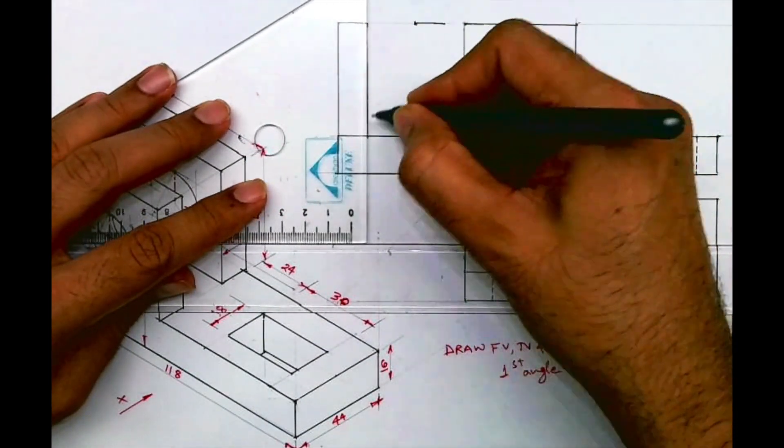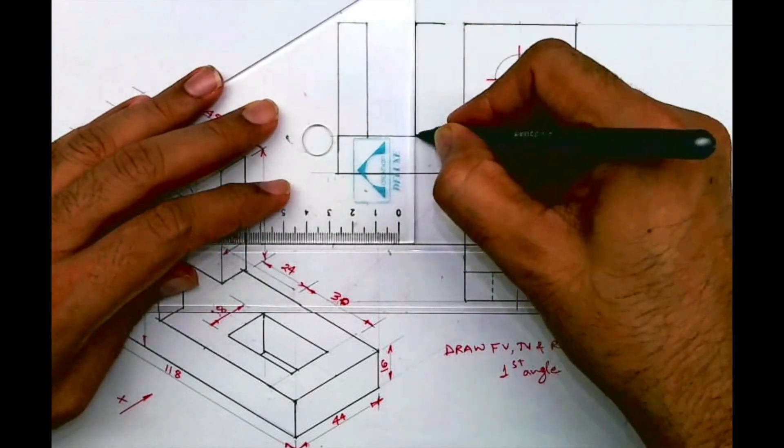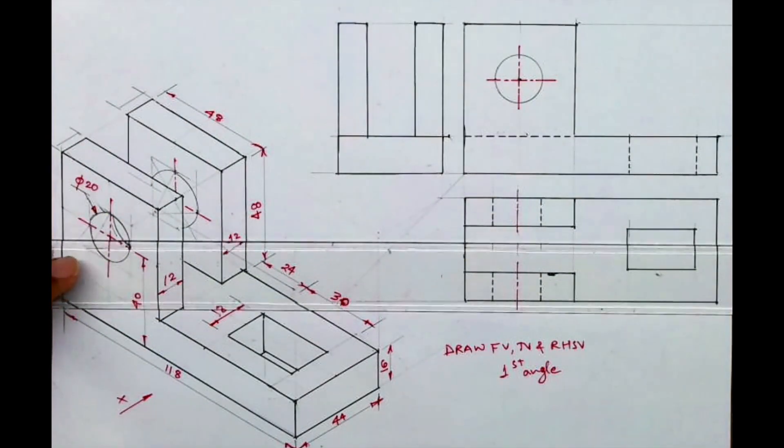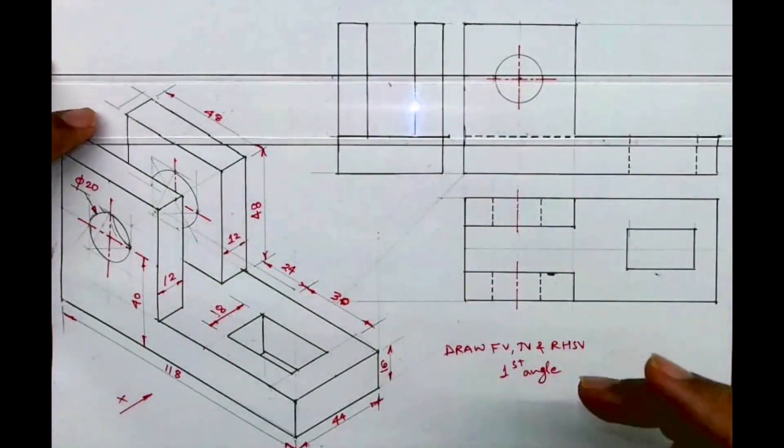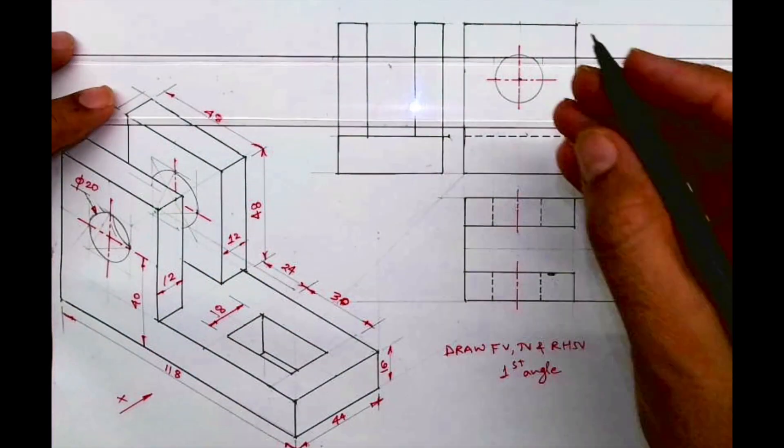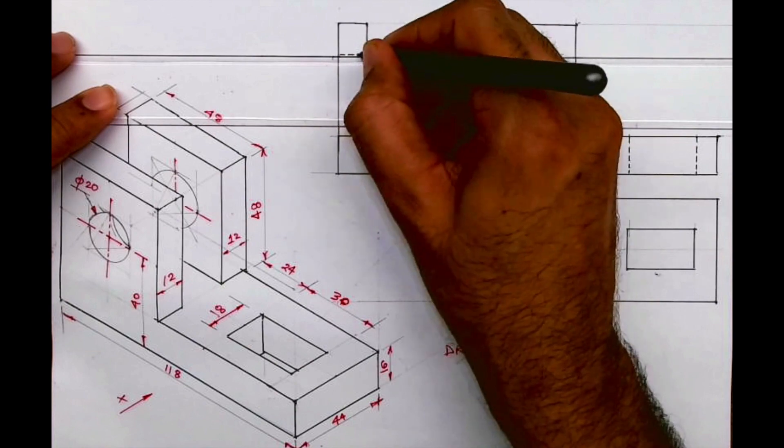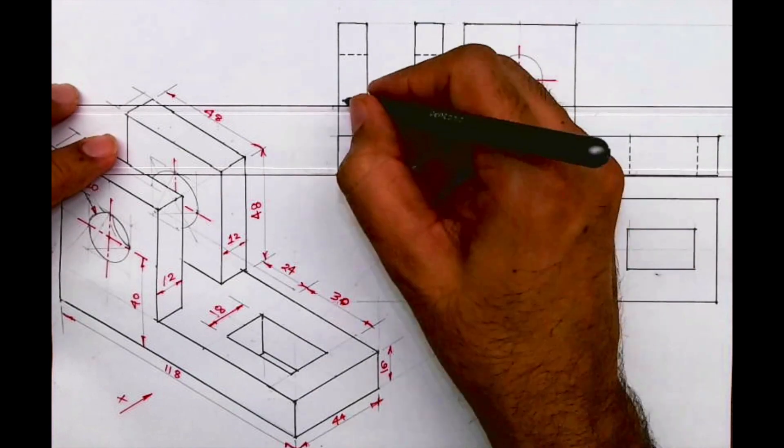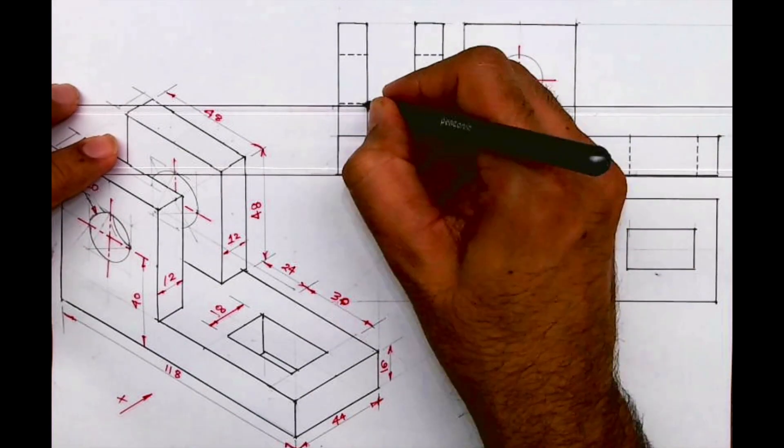So we'll get two rectangles. See this part - it will be here as well as here. It won't be through and through because there is a gap. Here also there will be a dotted line.